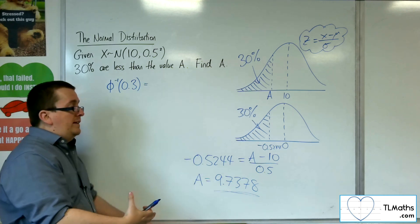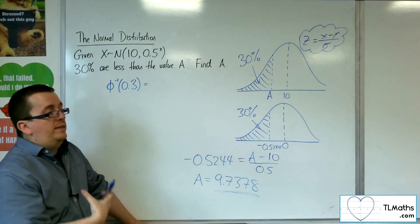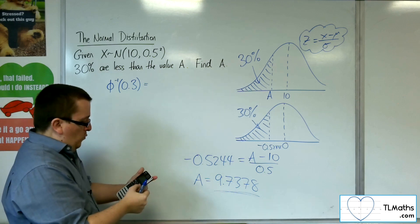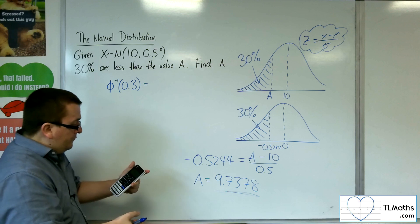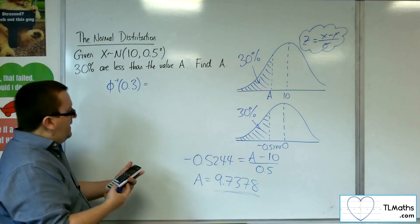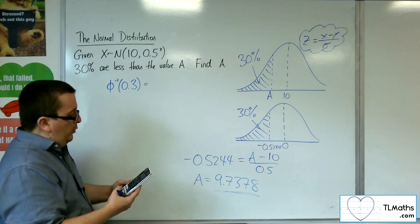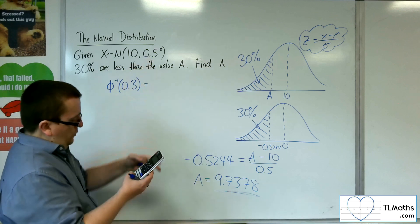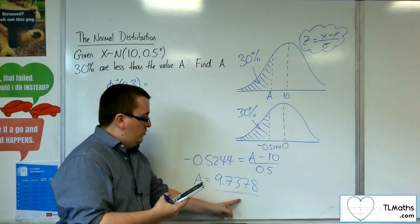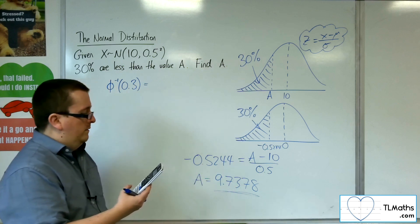Now, your calculator is actually able to work this out straight off the bat. So when you went into menu and then number 7, and you went to inverse normal, you had the options of not just typing in the area of 0.3, but also the sigma, 0.5, and the mean is 10. And that gives you directly 9.7378.